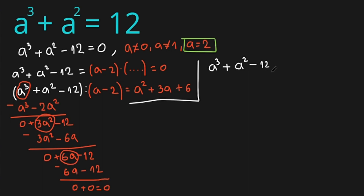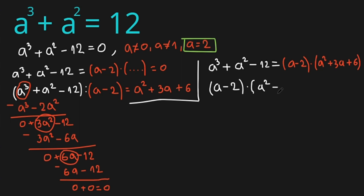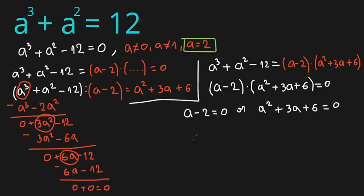So a cubed plus a squared minus 12 can be written as (a minus 2)(a squared plus 3a plus 6) equals zero. This equation has 3 roots: either a minus 2 equals 0, or a squared plus 3a plus 6 equals 0. Our first answer is a₁ equals 2. Let's find the second and third answers.